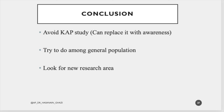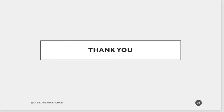In conclusion: avoid KAP studies — replace with terms like 'awareness' or similar; try to do research among the general population in villages and society; look for new research areas like environmental health and social media effects; and try to do something novel and new, because your chance of getting published is very high. Thank you so much for watching — please subscribe and follow our YouTube channel.